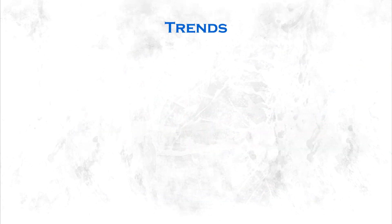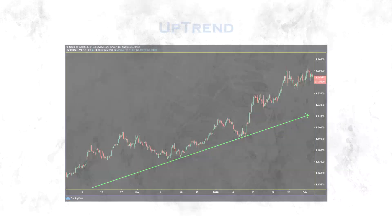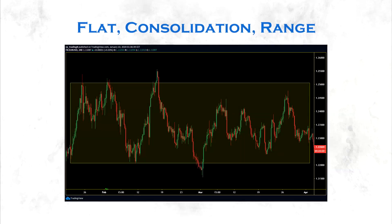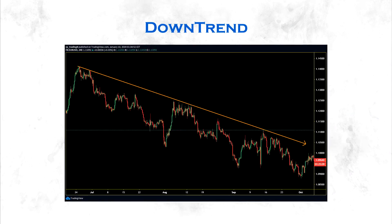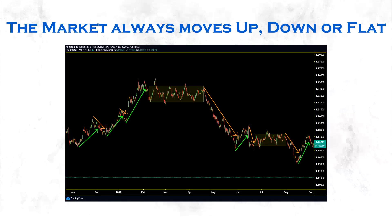Next thing I want to talk about is trends. We'll go more in depth in the market structure lesson, but here are the absolute basics. If the market is moving upwards, we call it an uptrend. If the market is moving sideways, we call it flat, consolidation, or range. If the market is moving downwards, we call it a downtrend. The market is always moving in these three different trends — up, down, or sideways.